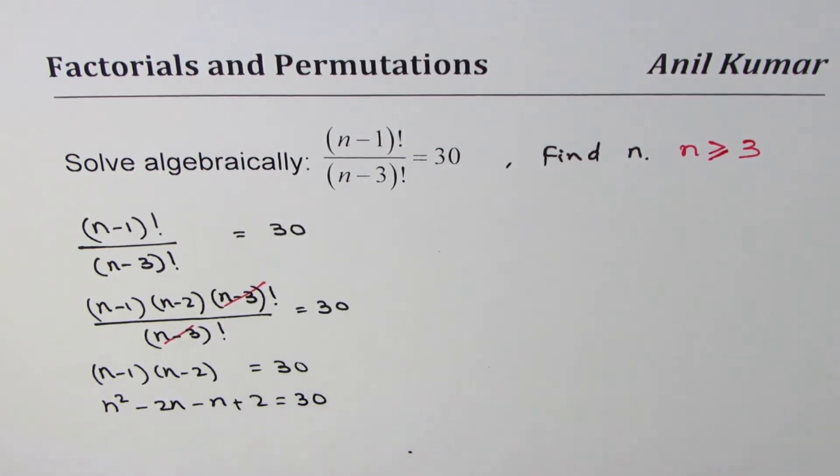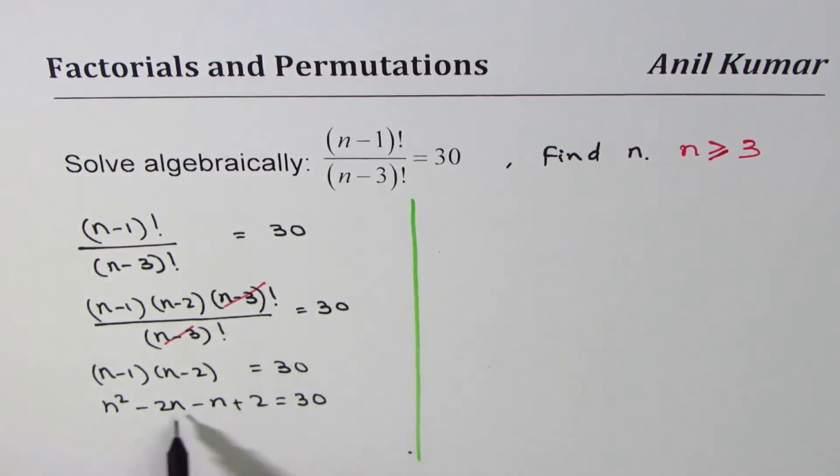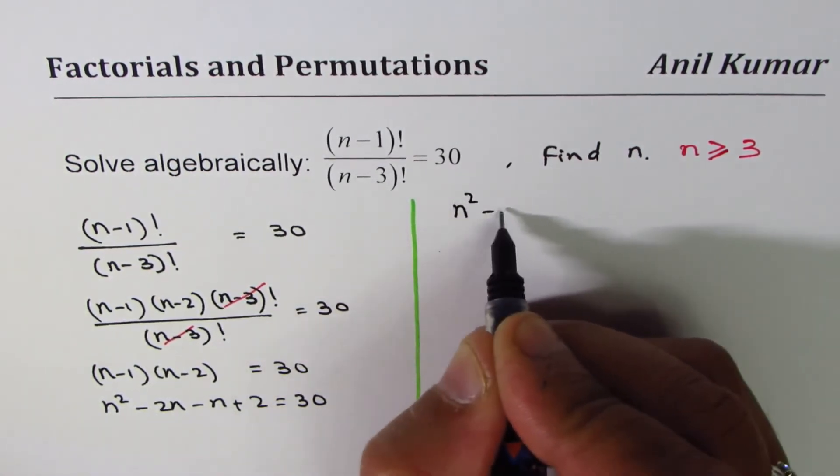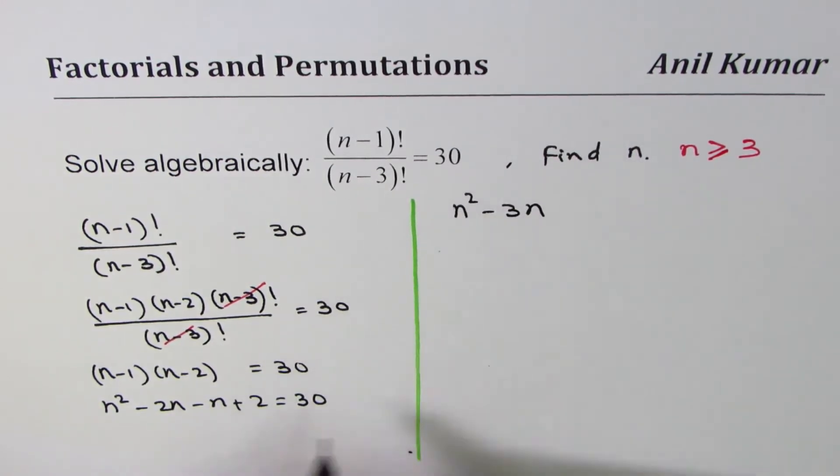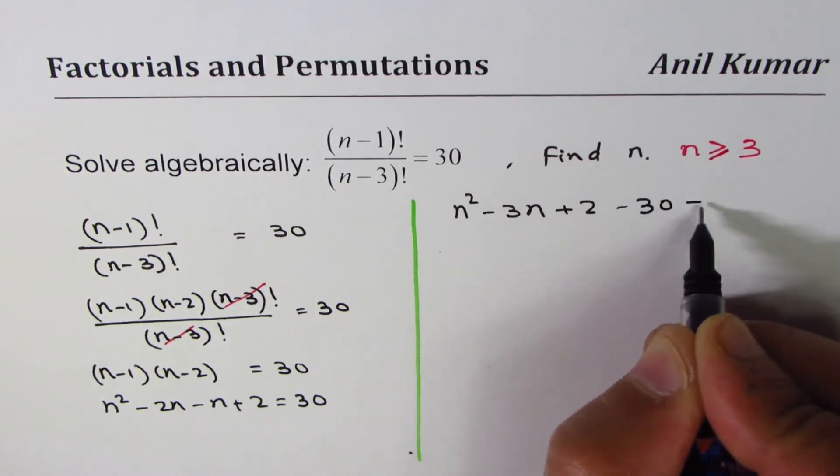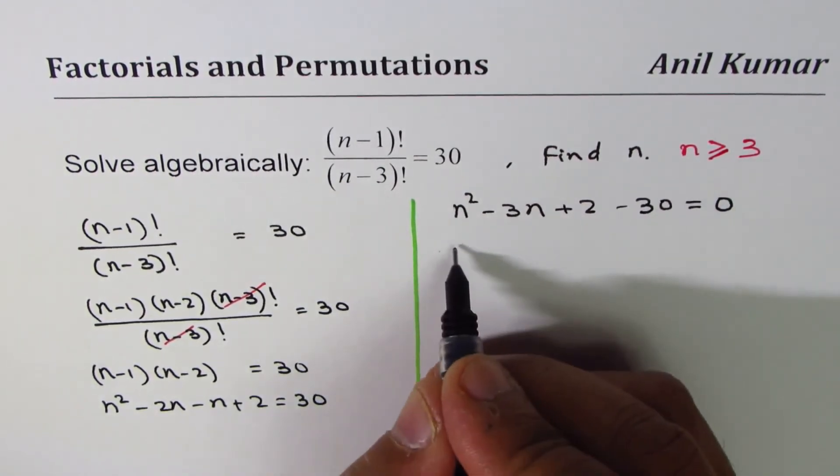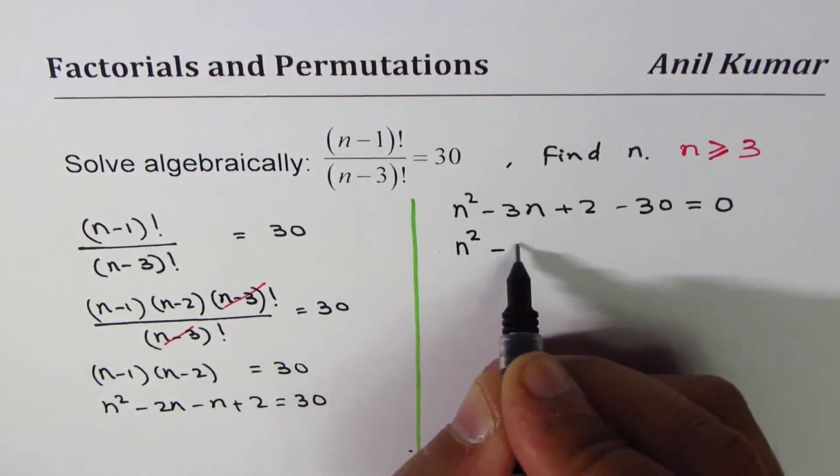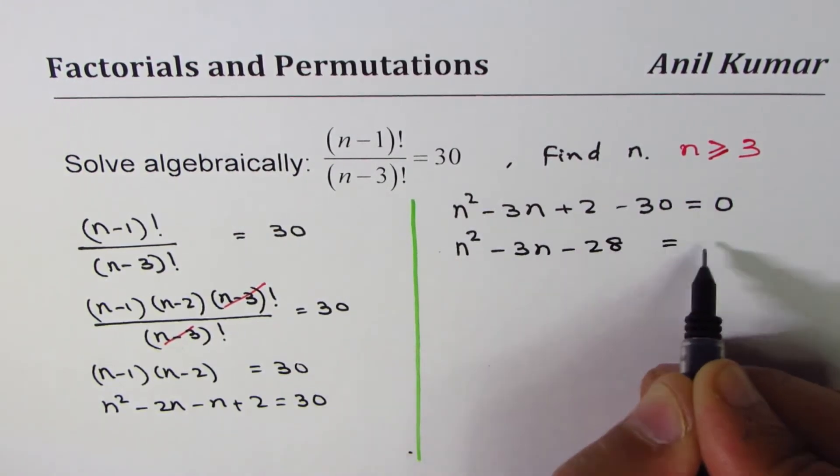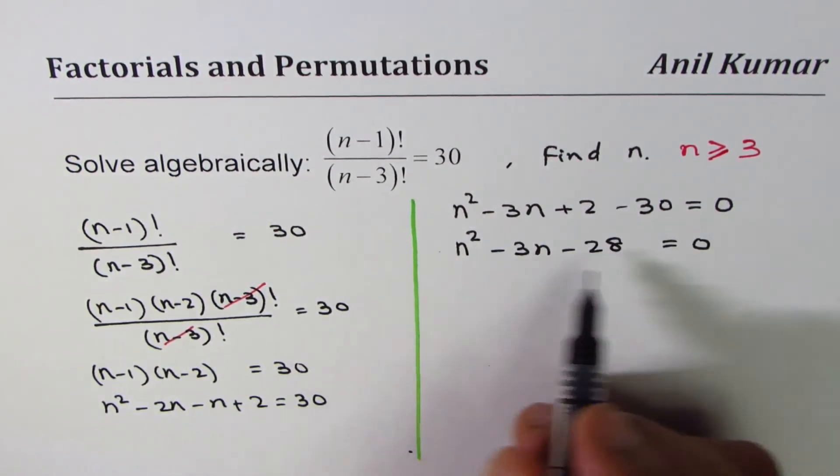Now that is a quadratic equation, so we can combine the terms. n² minus 2n minus 2n is n² minus 3n. We get n² minus 3n plus 2 minus 30 equals 0, which is n² minus 3n minus 28 equals 0.